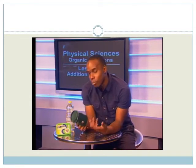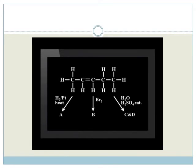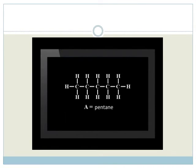Let's predict the products formed in A, B, C and D. We start with A. When we add hydrogen to pent-1-ene, what product is formed in A? The answer to A is the saturated molecule, pentane.